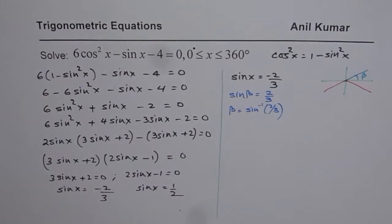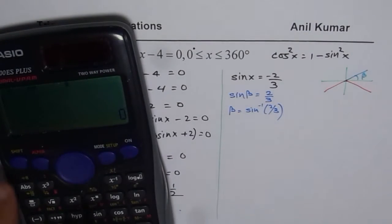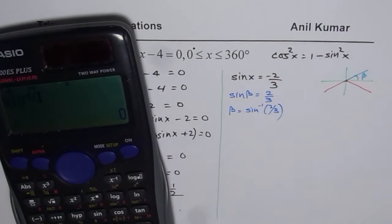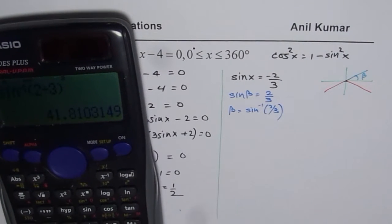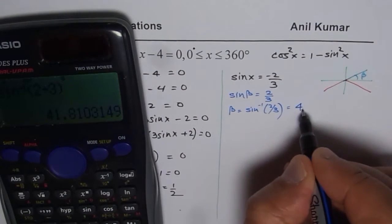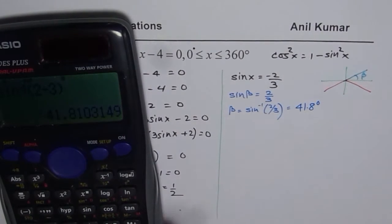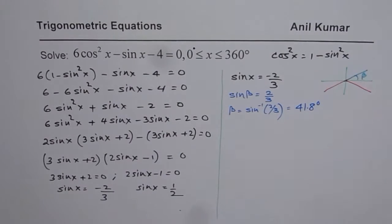So that gives us the value as shift sin inverse 2 divided by 3 bracket close. We will round the answers to one decimal please. We have 41.8 degrees. So we have got the related acute angle.